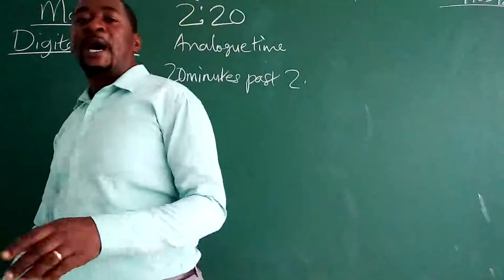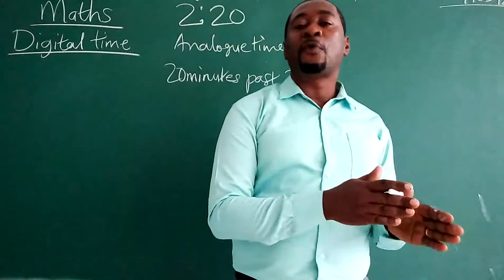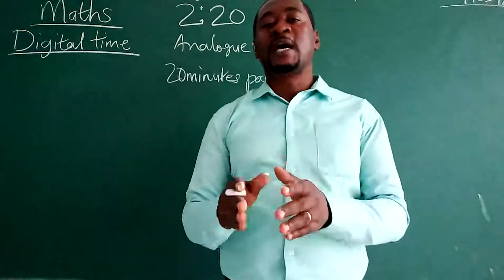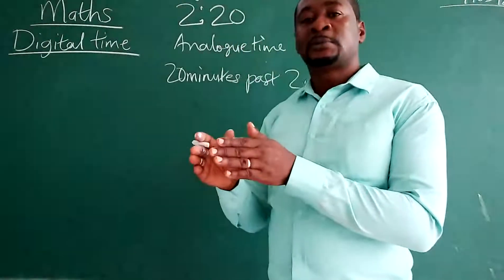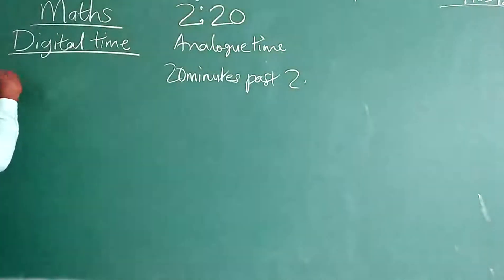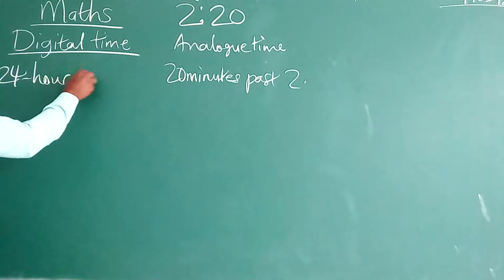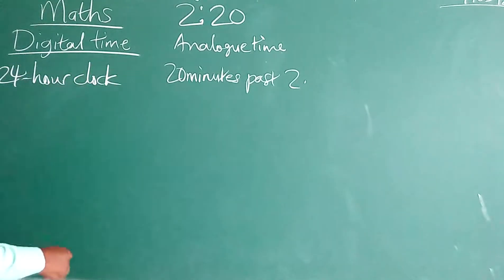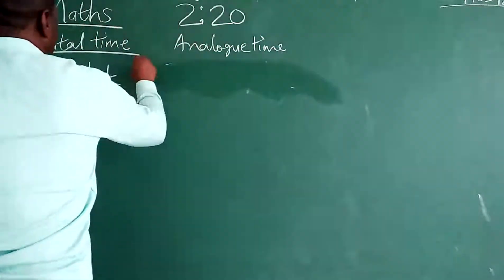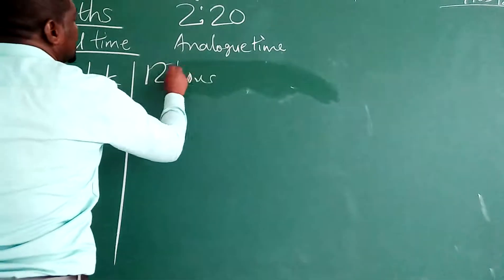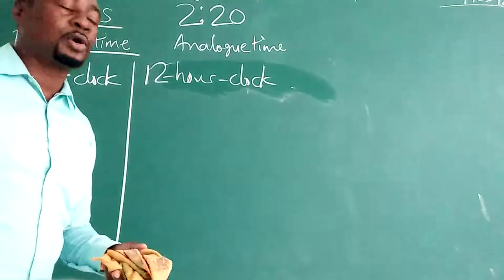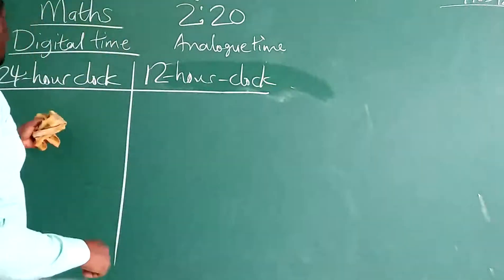For digital time, we have two types. We have 24-hour clock time and 12-hour clock time. So this is digital time — we have 24-hour clock and we have 12-hour clock.